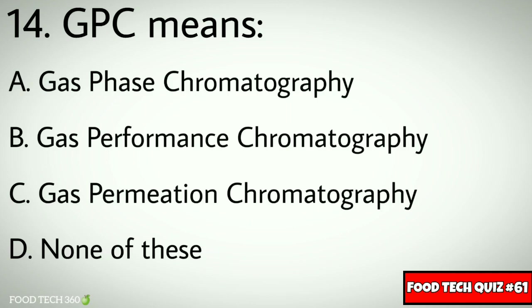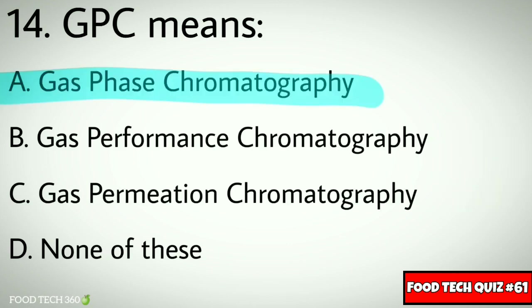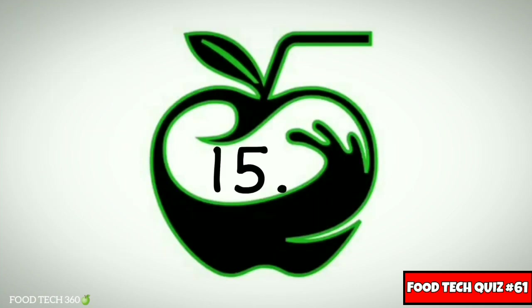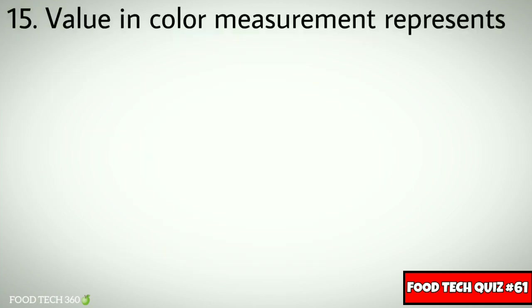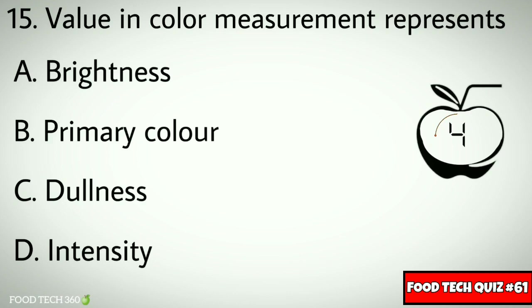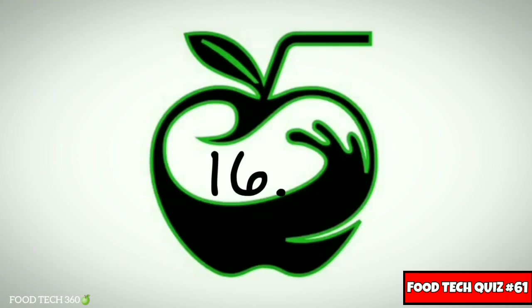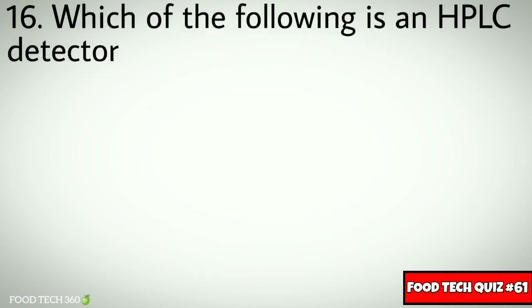Correct answer: a) gas phase chromatography. Question number fifteen: the L value in color measurement represents — options: a) brightness, b) primary color, c) dullness, d) intensity. Correct answer: a) brightness. Question number sixteen: which of the following is an HPLC detector?